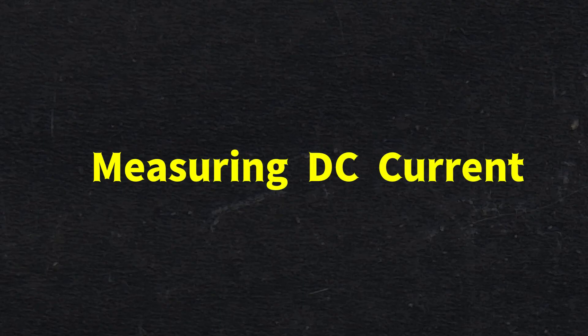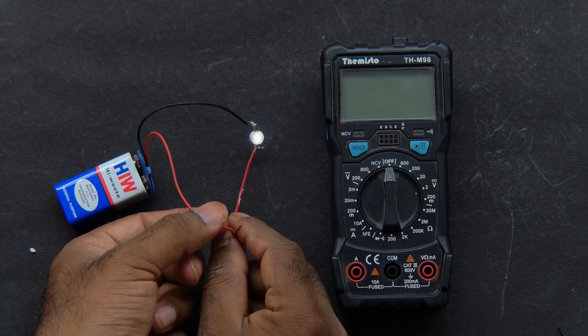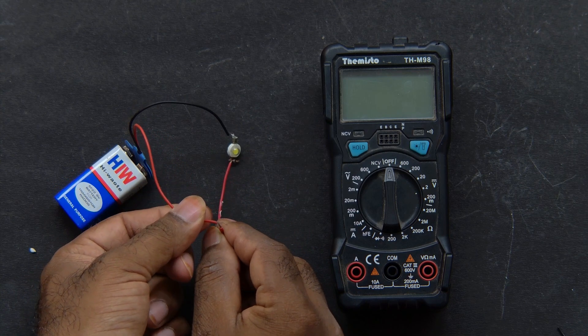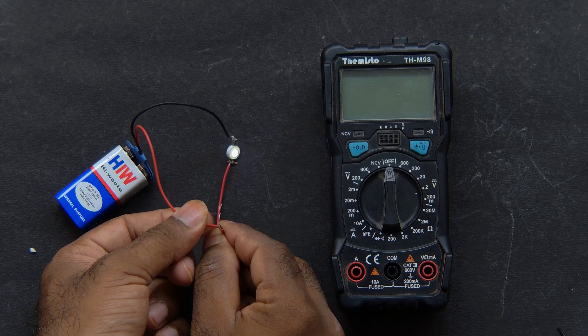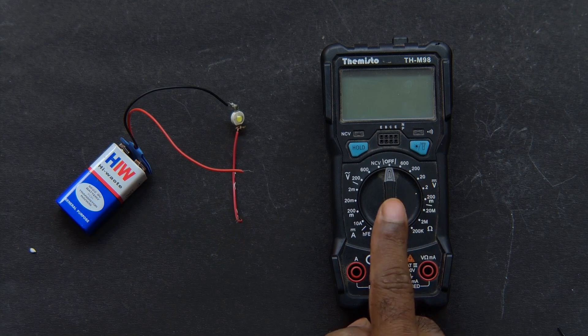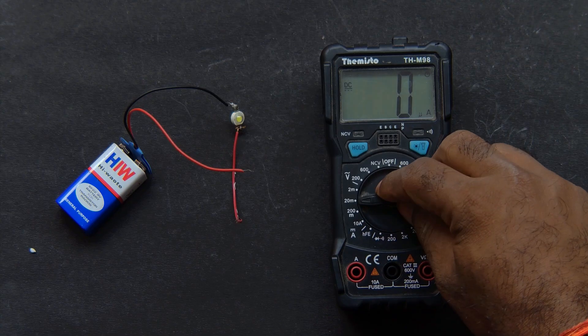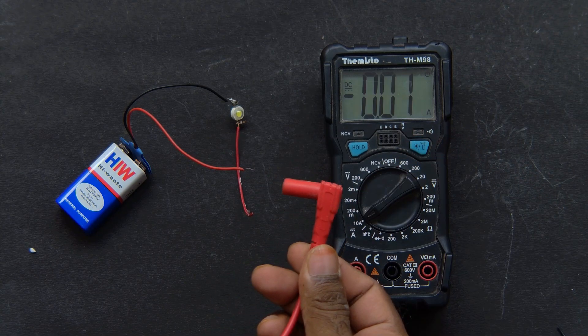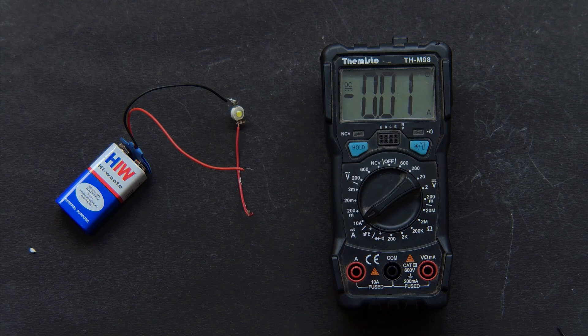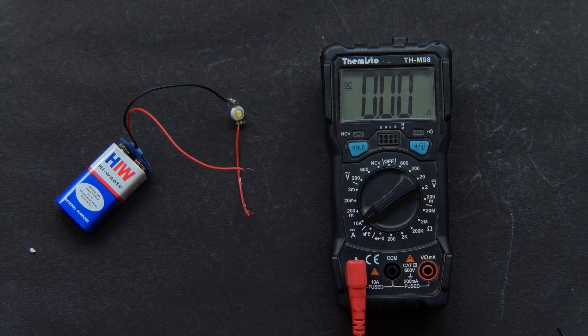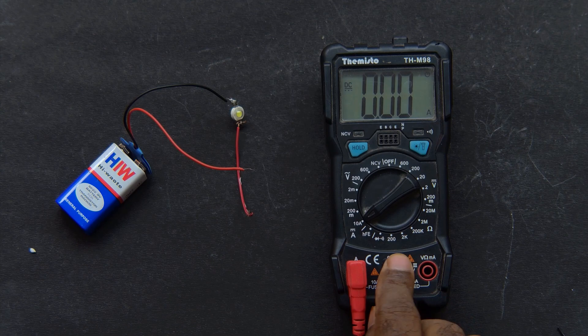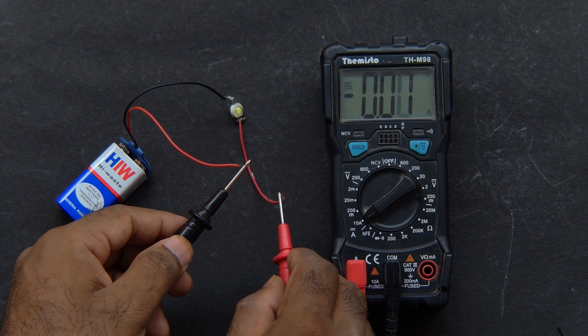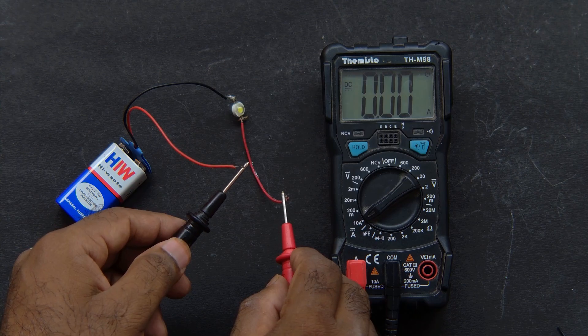Now comes the tricky part: measuring current. This is different because unlike voltage or resistance, current must be measured in series with the circuit. That means you have to open the circuit and insert the multimeter in line so the current flows through it. Turn the dial to the A settings—either milliampere for small currents or 10A for larger ones. Make sure the red probe is in the correct port. For 10A current, it must be in the 10A socket. Current measurement is very useful, but be careful. Measuring current in the wrong way can damage your meter.